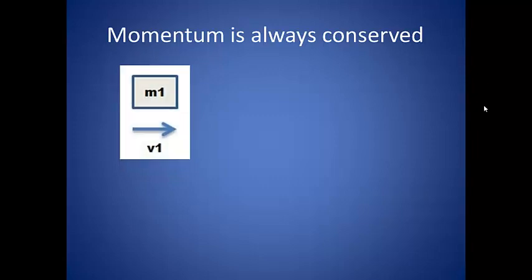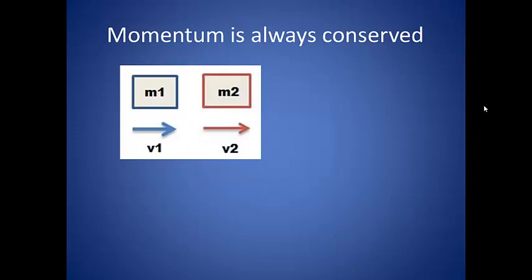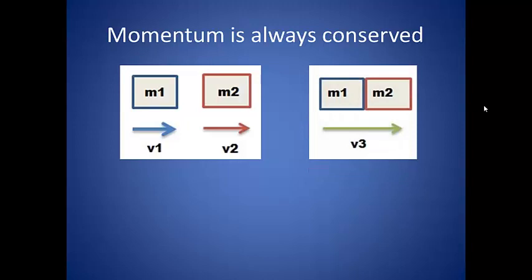If you take an object of mass m1 traveling at a velocity of v1, and it hits another object of mass m2 traveling at a velocity of v2, when they hit, they will stick together so that we consider them one object. The two masses combine, and the entire system is traveling at a new velocity v3.